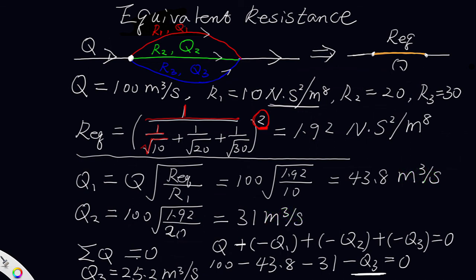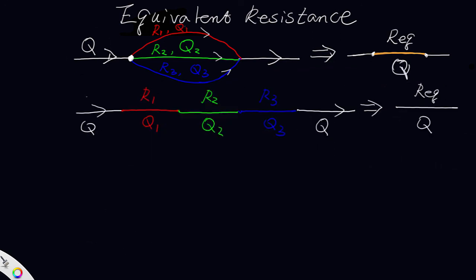The flow rate is in cubic meters per second. In this video, we have talked about how to use equations to calculate the equivalent resistance when airways are either in parallel or in series, and how both cases can be reduced to one equivalent airway with equivalent resistance and air quantity.